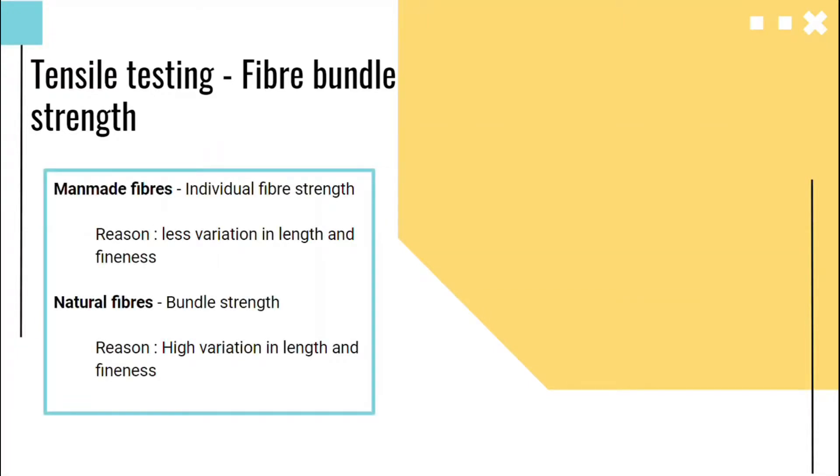In manmade fibers, individual fiber strength is measured because there is less variation in length and fineness. But in case of natural fibers, bundle strength has to be tested because there is high variation in length and fineness.